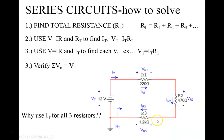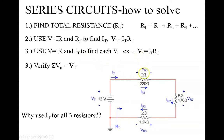Step one: find the total resistance. RT equals R1 plus R2 plus R3 - just add them up. Step two: find the total current using V equals IR, where Vt is the battery voltage and RT is what you just calculated. That gives you IT, the current everywhere. Step three: use V equals IR to find the voltage drop across each resistor - the drop across each one is IT times its resistance. Verify that your voltage drops add up to the battery voltage.